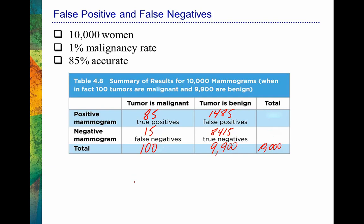Now let's compute the row and column totals. The total with a positive mammogram result is 85 + 1,485 = 1,570. The total with a negative mammogram result is 15 + 8,415 = 8,430. Checking our work: 1,570 + 8,430 = 10,000, and 100 + 9,900 = 10,000. All the numbers add up correctly, so we haven't made any mistakes.